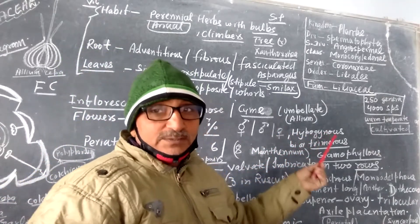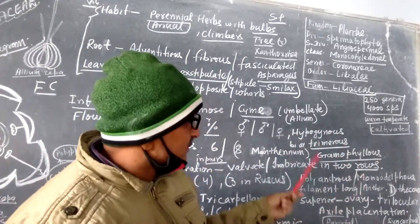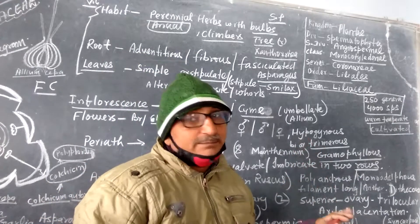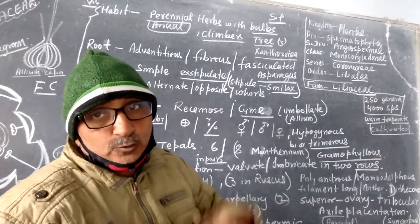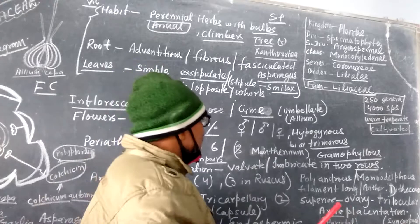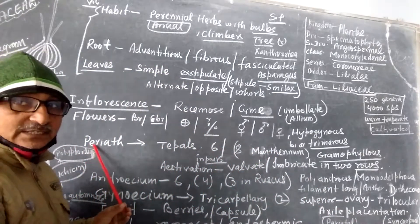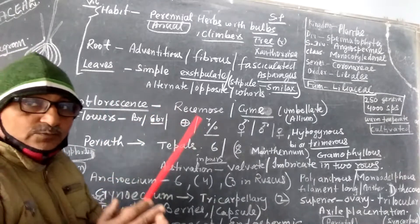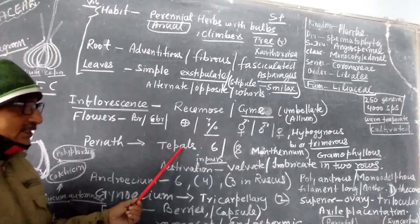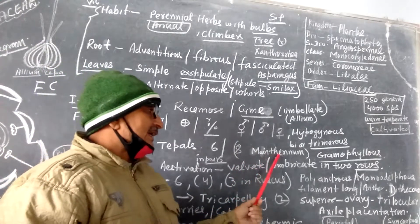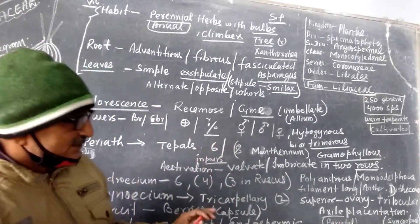Hypogynous, the ovary lies at the top, and bi- or trimerous, in the multiple of two or multiple of three. Perianth, no sepals or petals are there. They are fused together to form the perianth. Tepals 6 to 8, 8 in some cases and rest is 6.